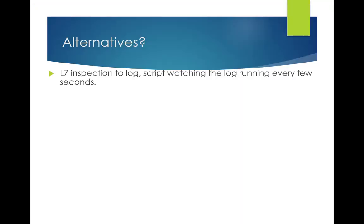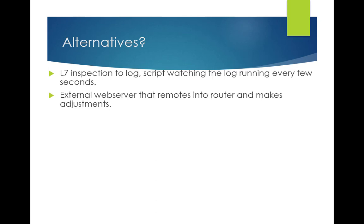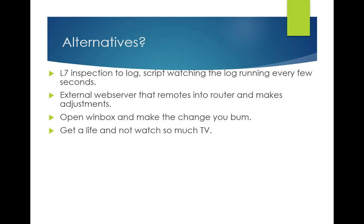Some alternatives: you could do a Layer 7 inspection to a log — send traffic that triggers Layer 7 inspection, it puts a message in the log, and you've got a script watching the log every few seconds that activates on that. You could have an external web server that whenever you hit it, remotes into your MicroTik and makes adjustments via the API or SSH. You could open Winbox and just make the change manually. But I was thinking — what's the absolute simplest thing? What could you give your mom so she could open her phone browser and click on or off? That makes it very simple. Or you could just not watch so much TV.